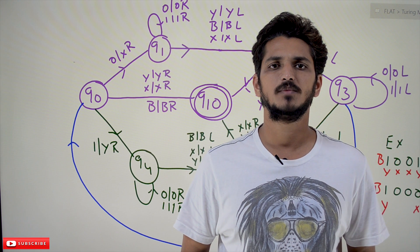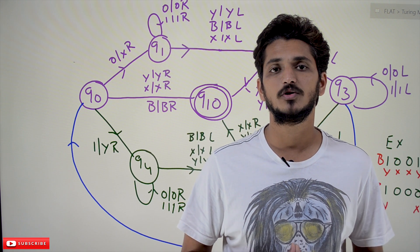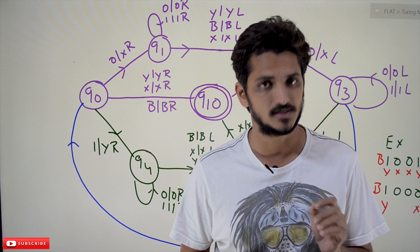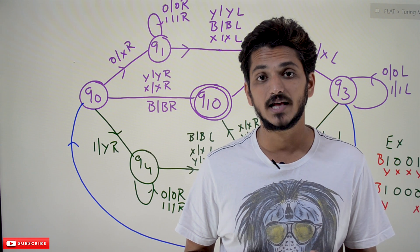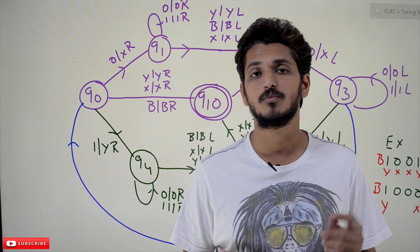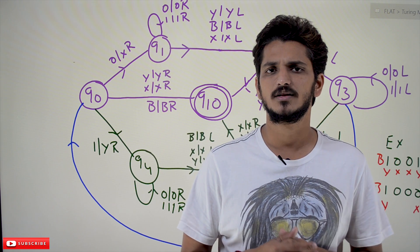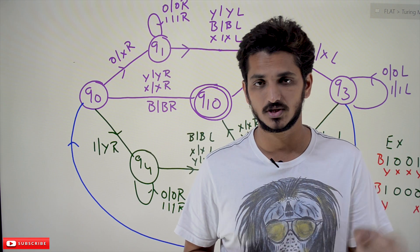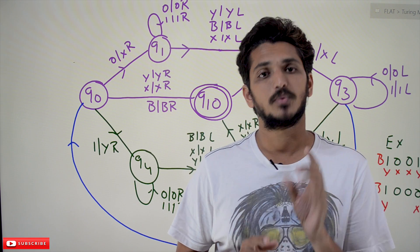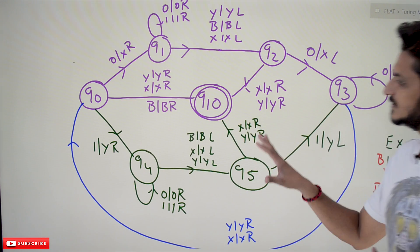Hi, welcome to Learning Monkey. I am Raghu. In this class, we will discuss acceptance of a Turing machine using halt state. In our previous class, we clearly discussed an example of how to construct a Turing machine for palindrome. We will use the same example here. To understand this class, please watch that class first. The link for the playlist is provided in the description below.